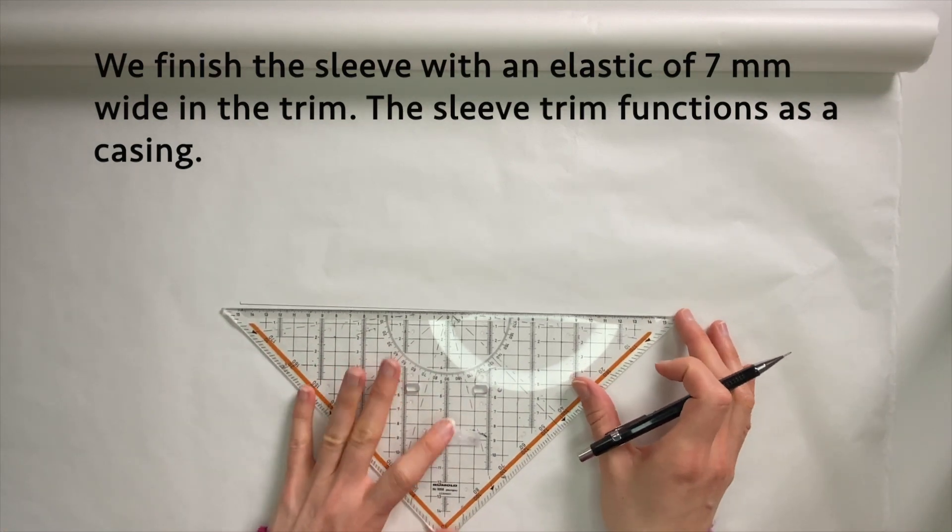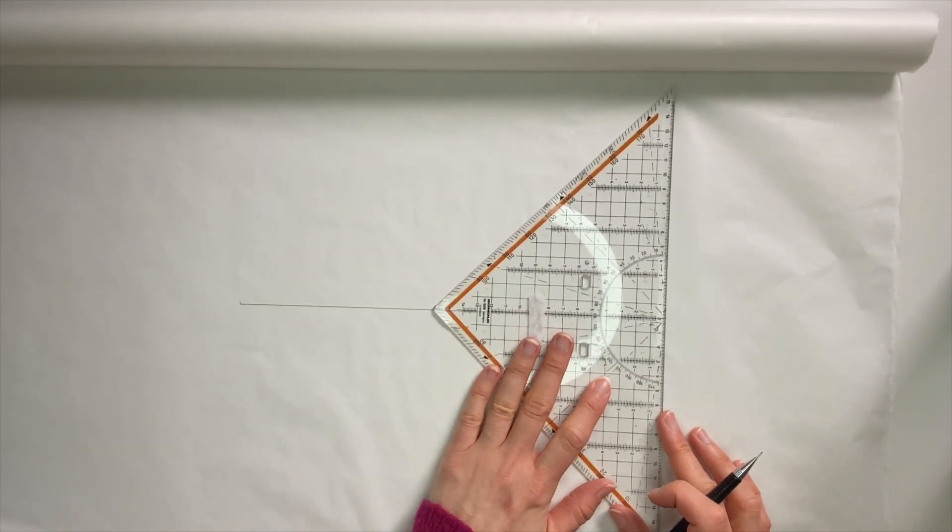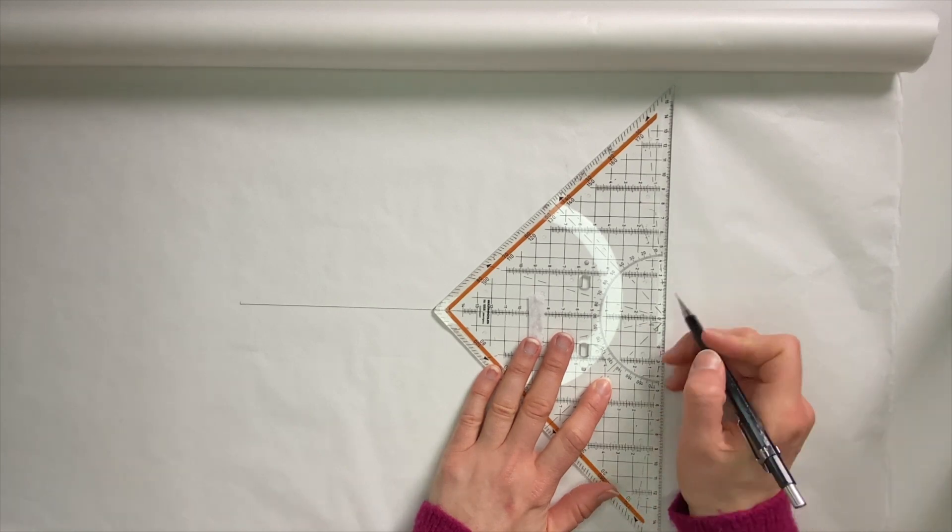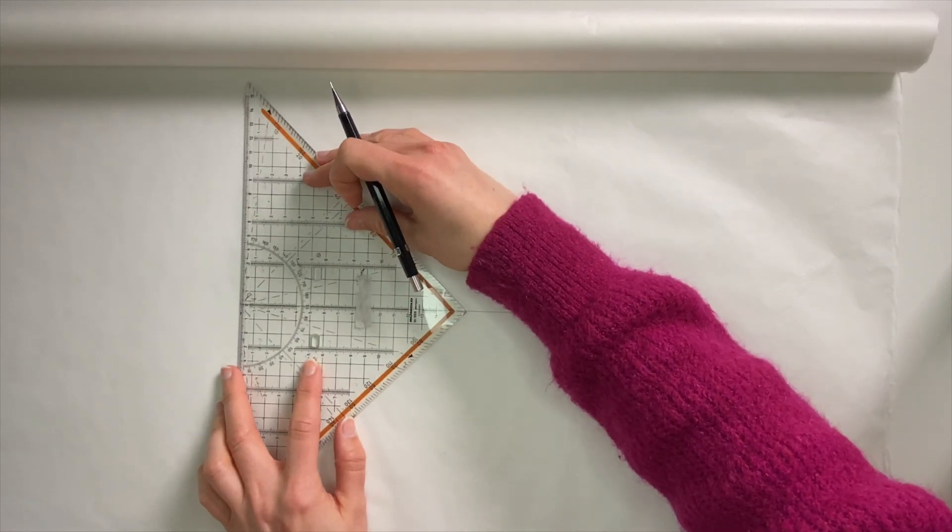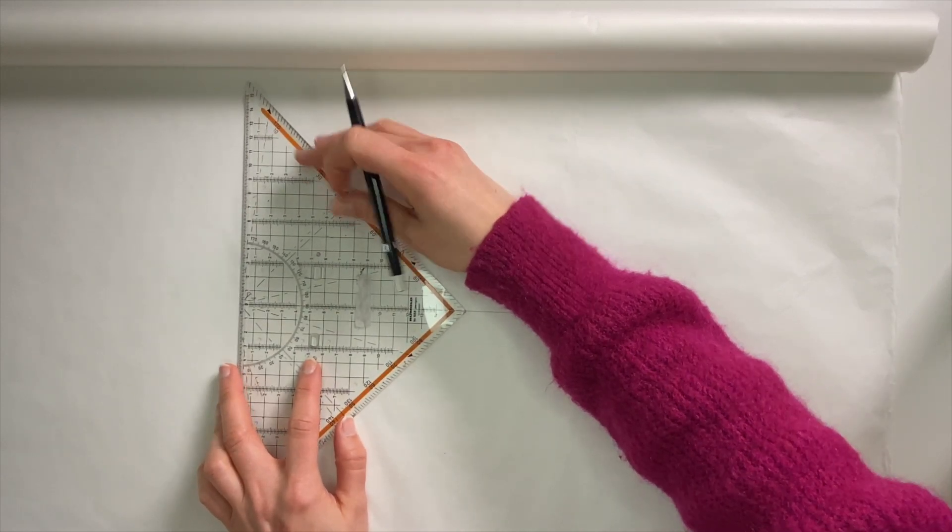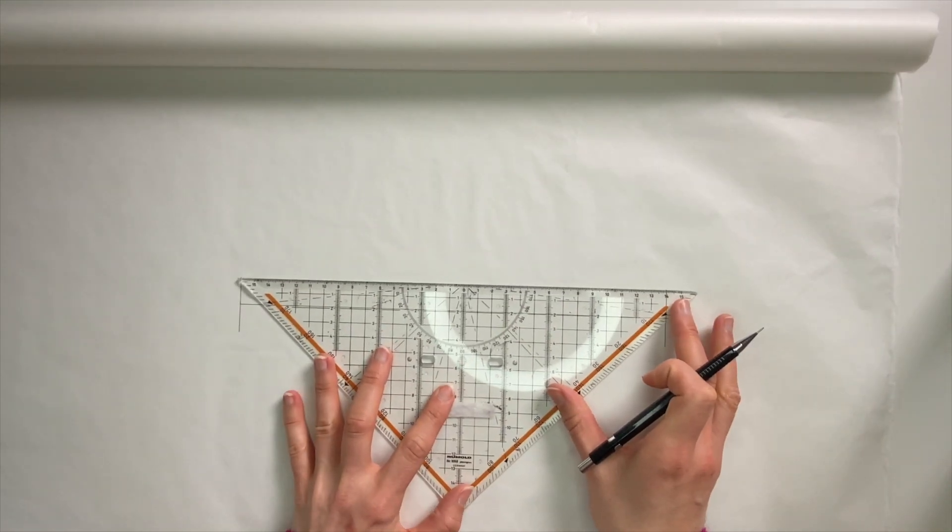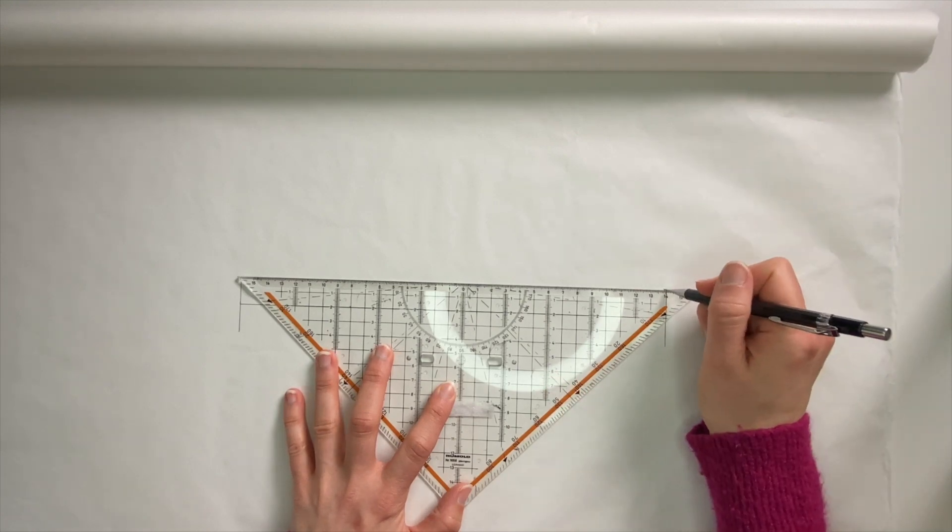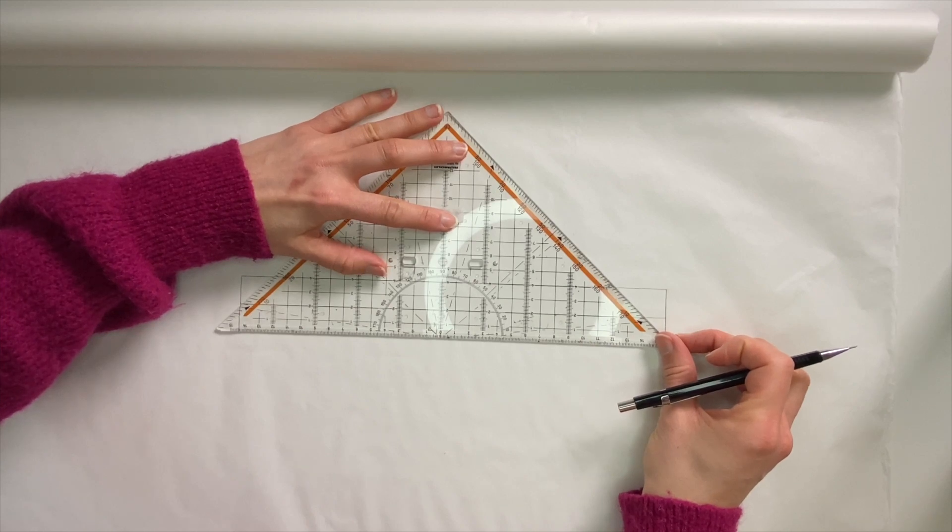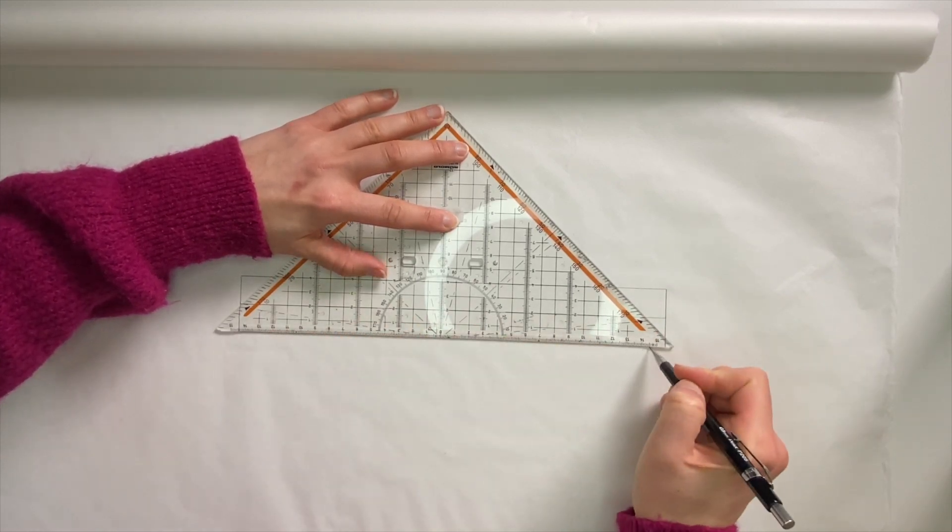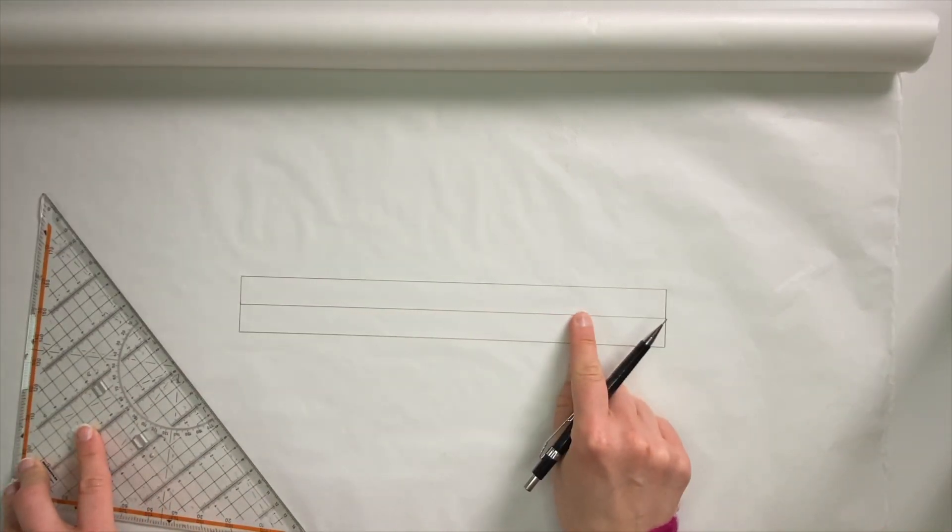We've chosen a sleeve trim of a width of 2 centimeters, which means you need 4 centimeters because we double it, so the trim also functions as a casing. So I'm gonna draw 2 centimeters on each side of my line. So this is going to be the fold line.